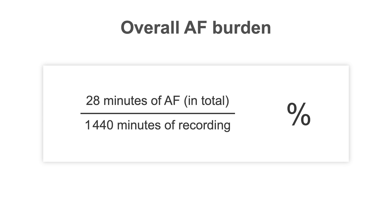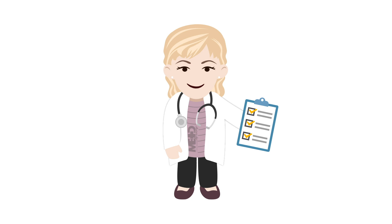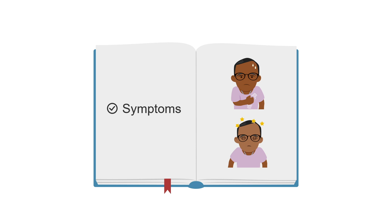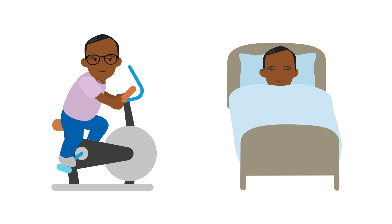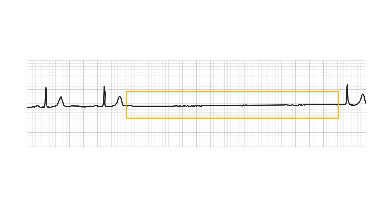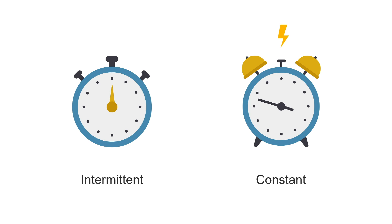To summarise, reviewing a Holter requires structure. Firstly, assess the symptom diary — if the patient had symptoms, ensure that the ECG findings at the time of the relevant symptoms are noted. Check the rhythm and beat morphology at the start of the recording and note any baseline abnormalities. Ask yourself if they are appropriate for the context, for example exercise, rest or sleep. Diagnose beat morphologies and check for pauses. Don't forget to establish whether they are intermittent or constant. And as always, note frequency, onset and offset of each individual event as they occur.